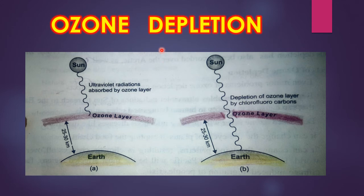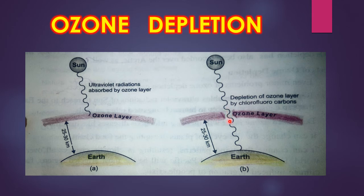Now let's see the difference between normal and depleted ozone layers. In a normal ozone layer, ultraviolet radiation from the sun is absorbed by the ozone layer and is unable to reach the Earth's surface. Where depletion by chlorofluorocarbon compounds has occurred and a hole forms in the ozone layer, ultraviolet radiations are able to travel toward the Earth.